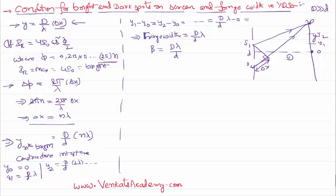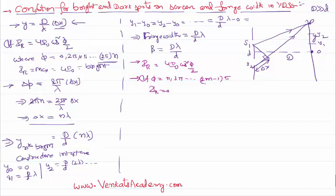We can prove the same even for dark spots. We know the resultant intensity is 4i₀ cos²(φ/2). If φ is π, 3π — that is (2m−1)π where m starts from 1 onwards — then the resultant intensity is zero. That is called a dark spot — destructive interference. Substituting into the relation delta φ = (2π/λ) · delta x, for the dark spot the condition on delta φ is (2m−1)π.